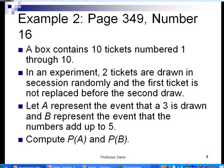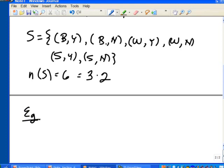So, in slide number seven, we have example number two. A box contains ten tickets numbered one through ten. In an experiment, two tickets are drawn in succession and the first ticket is not replaced before the second draw. Let's let A represent the event that a three is drawn and B represent the event that the numbers add up to five. Let's compute the probability of A and the probability of B. So, let's go ahead and solve this and see what we get. For example two, first, we need to find the cardinality of the sample space. In other words, the total possible number.